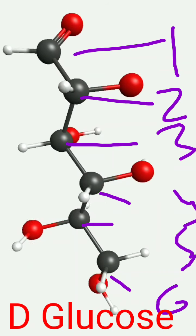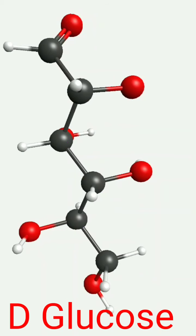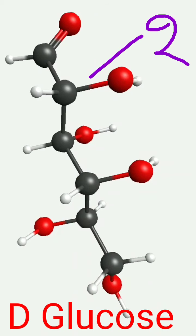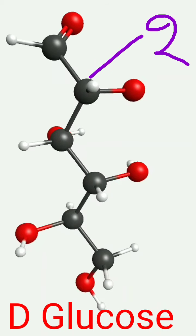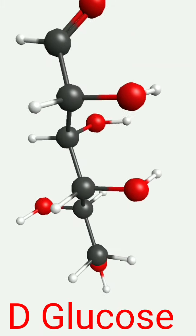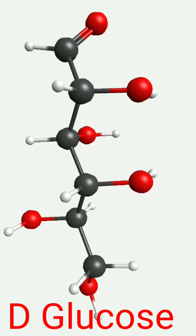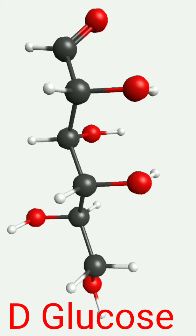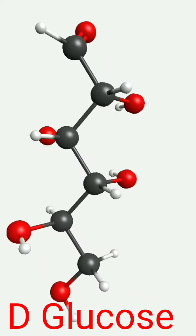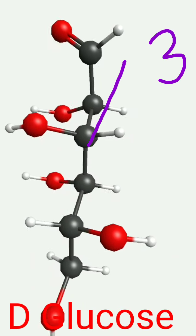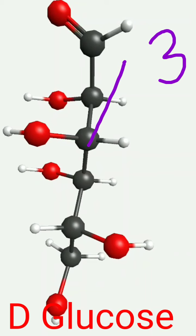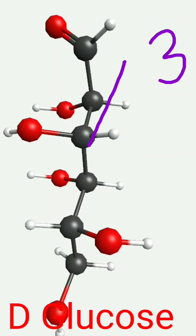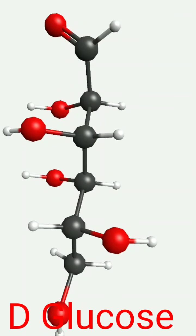If you want to see the configuration of carbon number two, you can easily see that OH is on the right side and hydrogen is on the left side. To visualize the configuration of carbon number three, we first have to put carbon number three in front, and then you can see that hydrogen is on the right side and hydroxide is on the left side.